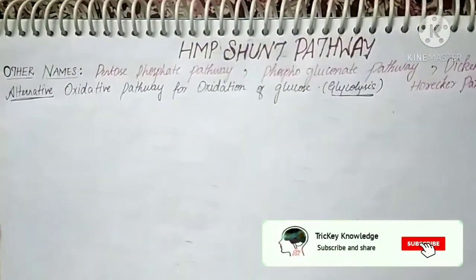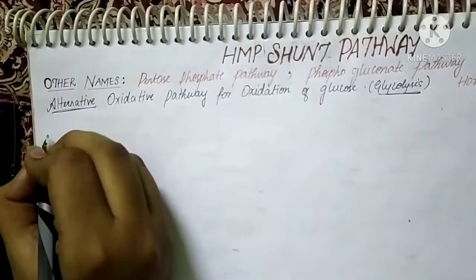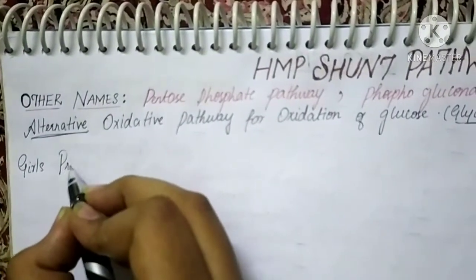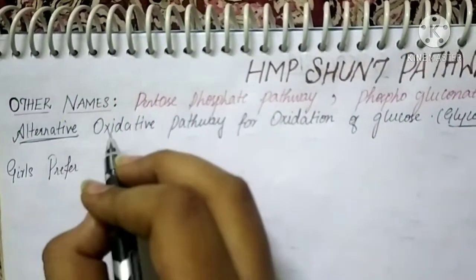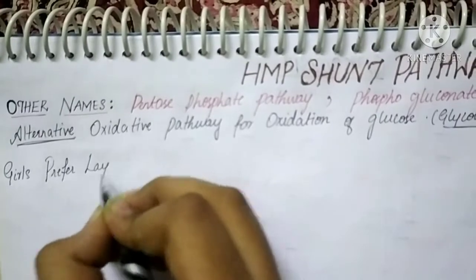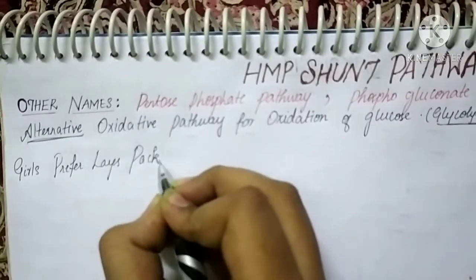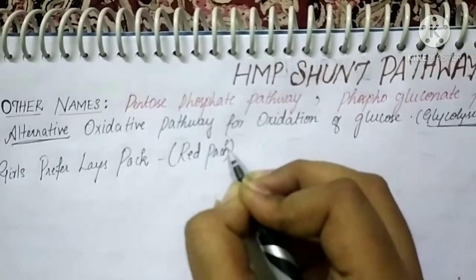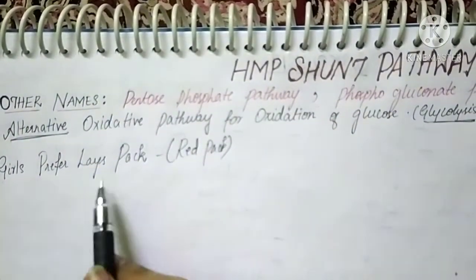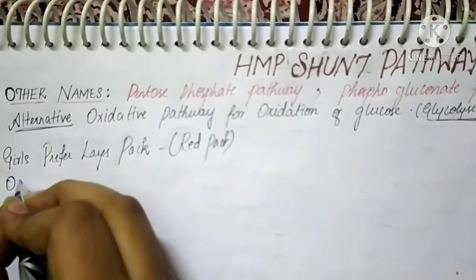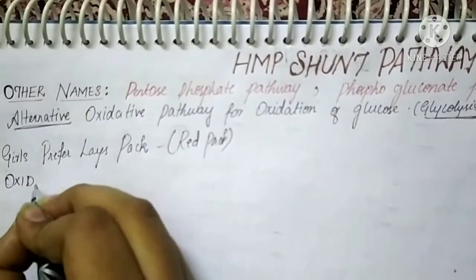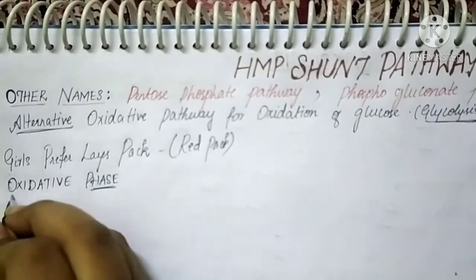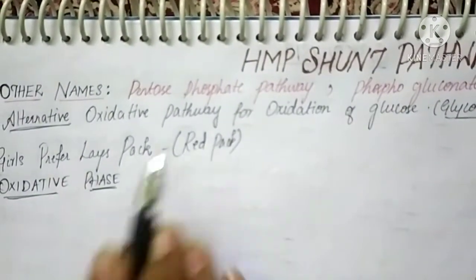A small trick to remember the HMP pathway. Remember this sentence: 'Girls prefer lace pack which is red pack.' This mnemonic is for the oxidative phase of the pathway.